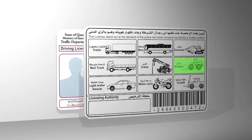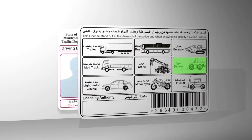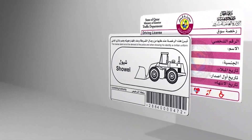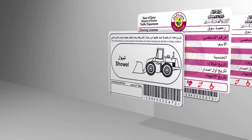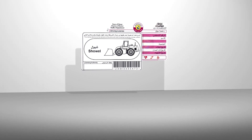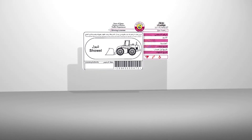Loader and Bulldozer: authorizes its holder to drive loader and less equipment vehicles, including automatic picker, grader, dumper, and tractor, and similar light motor vehicles registered and licensed by General Administration of Traffic.